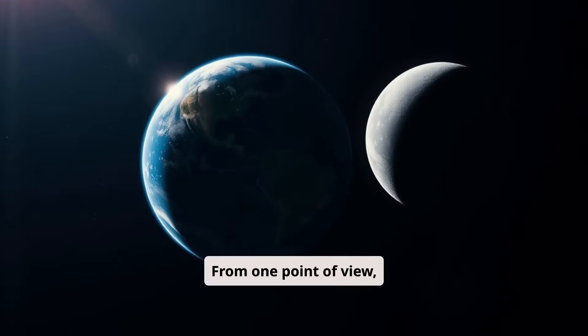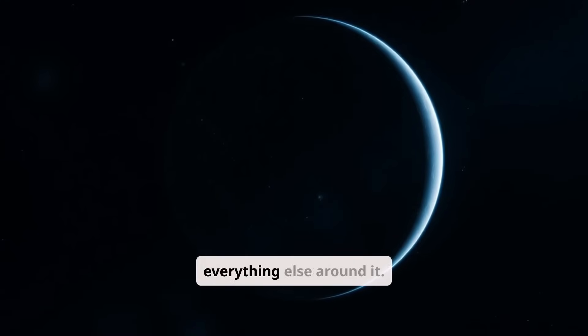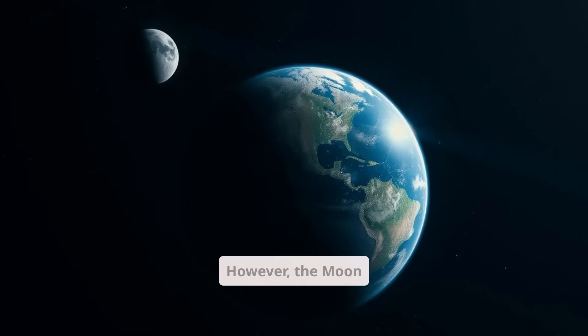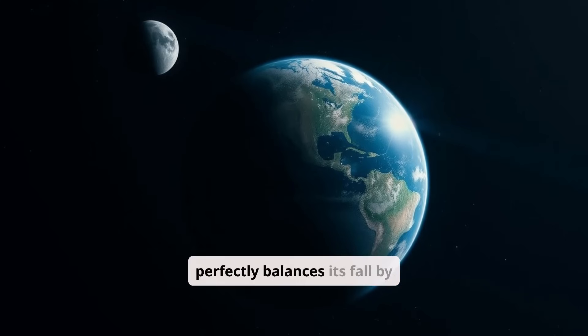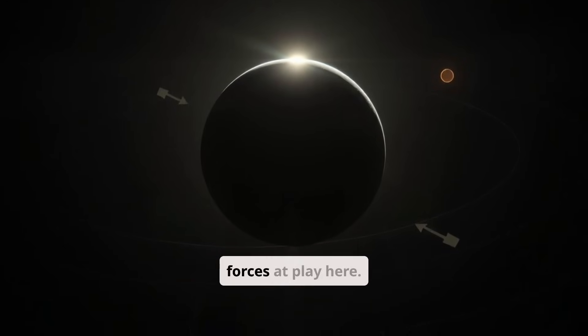From one point of view, the moon is actually falling toward earth. The earth pulls it with its gravity, just like everything else around it. However, the moon perfectly balances its fall by orbiting around the earth. In other words, there are many more forces at play here.